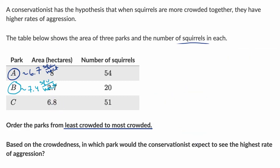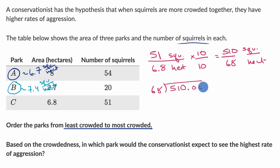Now let's check out park C. For park C, we have 51 squirrels for every 6.8 hectares. Let's multiply the numerator and the denominator by 10, which means we have 510 squirrels for every 68 hectares.